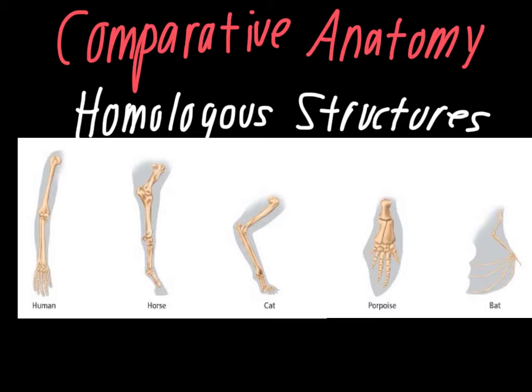What this supports is the idea of a common ancestor. All vertebrates are descended from one common individual because their general bone structure is the same. The functions of all these limbs are different — the bat uses this for flying, the porpoise for swimming, these two for weight-support, and for us it's mostly dexterity. But even though the functions are different, the bone patterns are all the same, showing that we're all modified from one similar original organism.